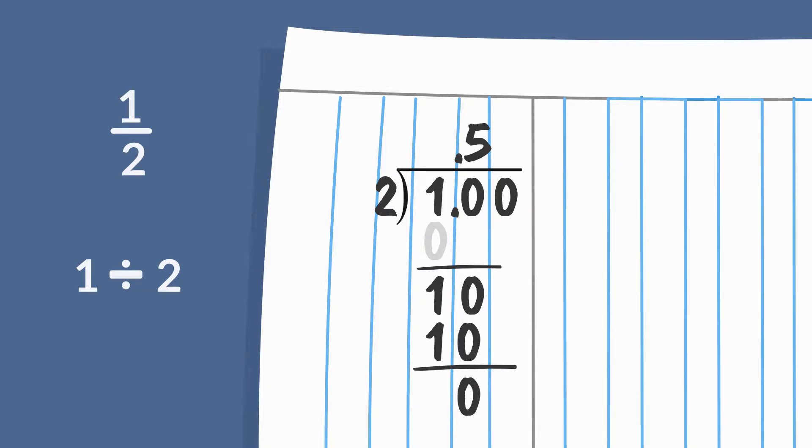If you want to find a percentage, keep going. Bring the second zero down. How many times does two go into zero? Zero. Now your quotient should read .50. Write this answer again in a space to the right of your division problem. Put your pencil on the decimal point, and move it two spaces to the right. Now write a percent sign after the number. .50 equals fifty percent.